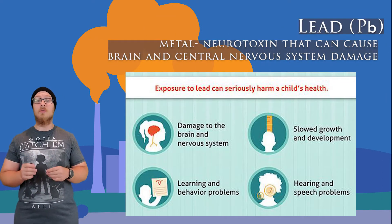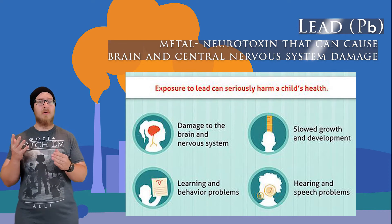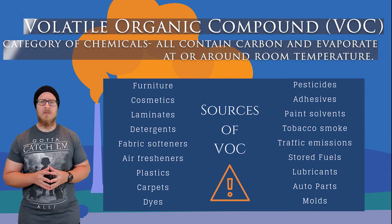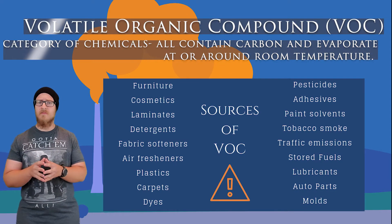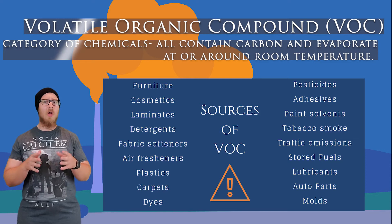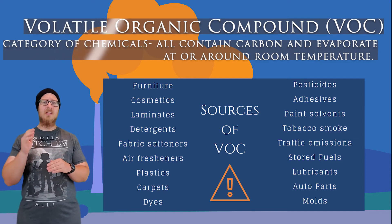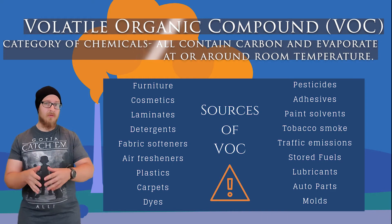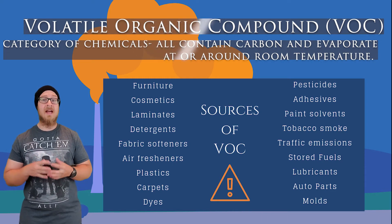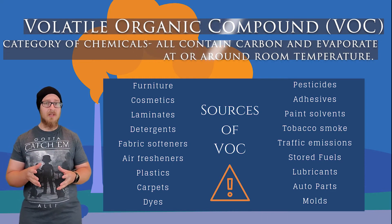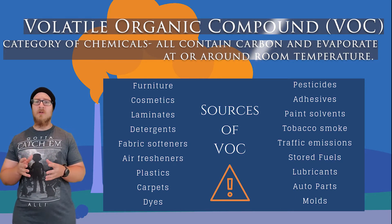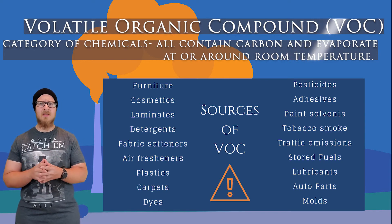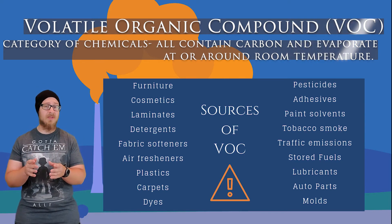Lead is a neurotoxin that can cause damage to your brain and central nervous system. Volatile organic compounds are a large category of many different chemicals, but they can all evaporate at or near room temperature, and they contain carbon somewhere in the molecule — therefore organic. Gasoline, for example, is a chemical that evaporates readily. Another common VOC you may know is formaldehyde.